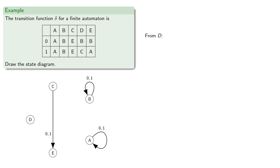From D, 0 goes to, and 1 goes to, and from E, which gives us our state diagram.